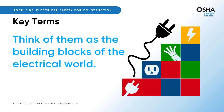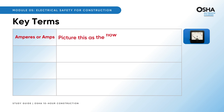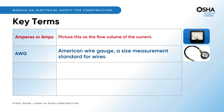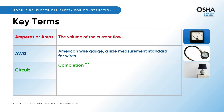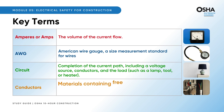Let's power up our understanding with essential key terms. First, amperes or amps — picture this as the flow volume of the current, the juice that keeps things running. Next is AWG, American Wire Gauge, a size measurement standard for wires. A circuit is the full journey of the current from its source through conductors to the load, like a lamp or heater. Conductors are materials that act as a highway for electrons, letting current flow through freely.